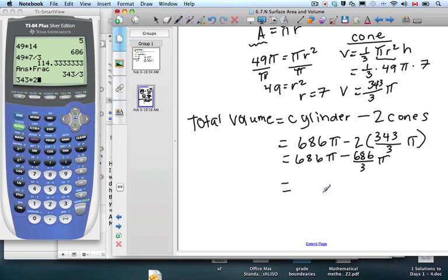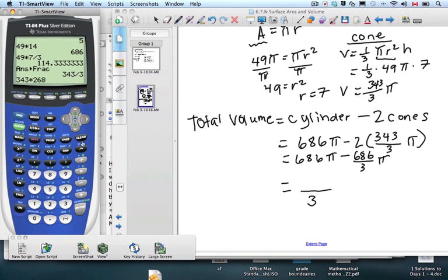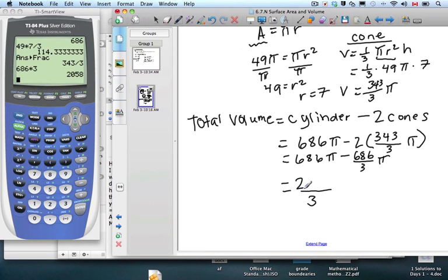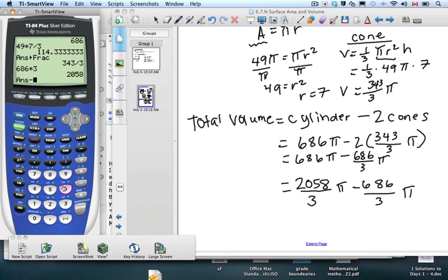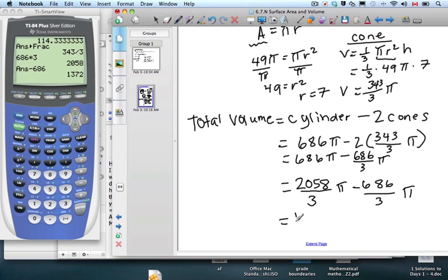Clean this up a little bit by multiplying. Just double it. That's 686. Minus 686 over 3 pi. Adding our fractions, common denominator. So we have to put this one over 3. 686 times 3, 2058 pi minus 686 over 3 pi. So 1372 over 3 pi.